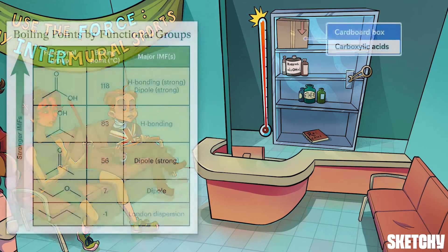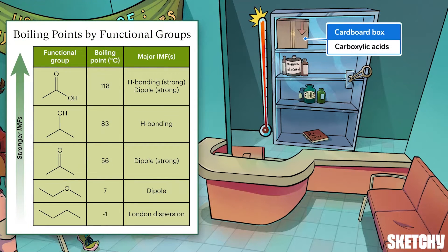At a given molecular weight, the carboxylic acid functional group will result in the highest possible boiling point. That's why we've placed this cardboard box on the highest shelf of this medicine cabinet. Carboxylic acids have very strong hydrogen bonding forces due to the strong polarization of their OH bonds, and they also have strong dipoles due to their carbonyl C=O bonds. In fact, C=O double bonds have much stronger dipoles than C-O single bonds. This power-packed combo of intermolecular forces makes carboxylic acids the highest temperature boilers and melters.